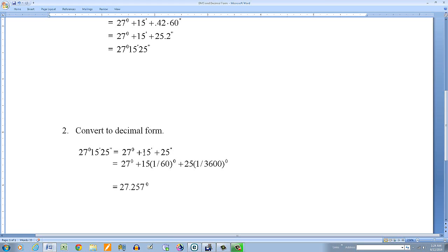So the 15 minutes right here, I'm going to break that up into 15 × 1'. But from the equations that I have above, one minute is 1/60 of a degree. So that's how I get this right here. And then 25 seconds, I'm going to break that up into 25 × 1". But one second, from the formula above, is 1/3600 of a degree. So I put this right here.